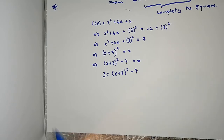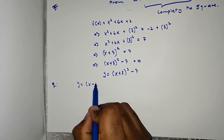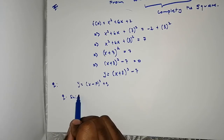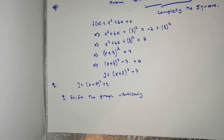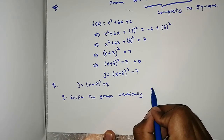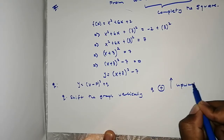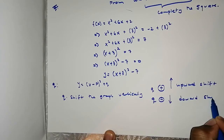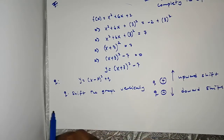Now let me introduce the value of q. If the equation is in the form y = a(x - p)² + q, then q shifts the graph vertically. If q is positive, the graph will shift upwards — an upward shift. If q is negative, it will be a downward shift.